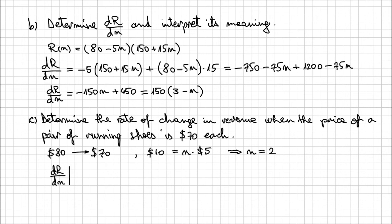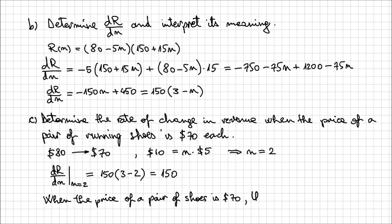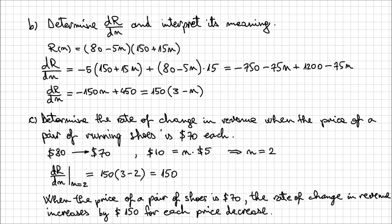dR/dn when n = 2 is going to be 150 times (3 − 2), which equals 150. In other words, when the price of the pair of shoes is $70, the rate of change in revenue increases by $150 for each price decrease. That's the significance of this result.